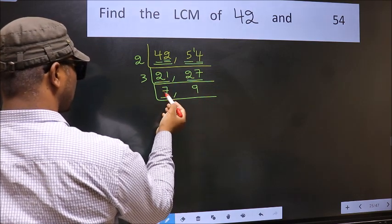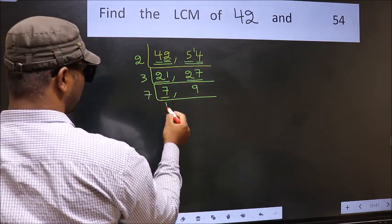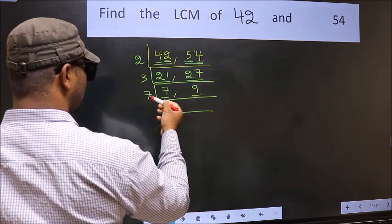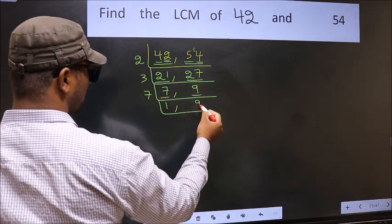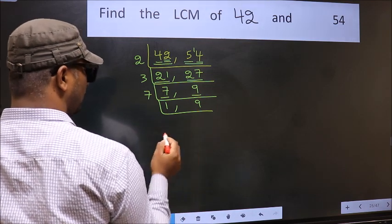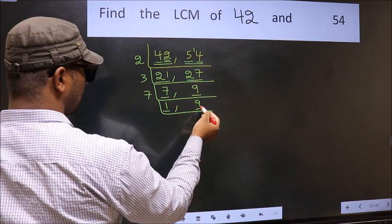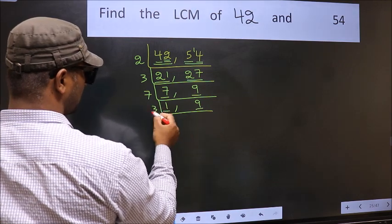Now here we have 7. 7 is a prime number, so 7 times 1 is 7. The other number 9, not divisible by 7, so we write it down as it is. Now we got 1 here, so focus on the other number 9. 9 is 3 times 3 is 9.